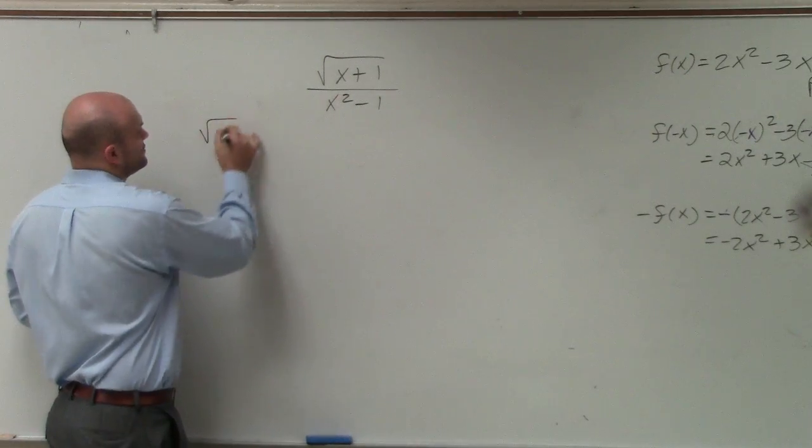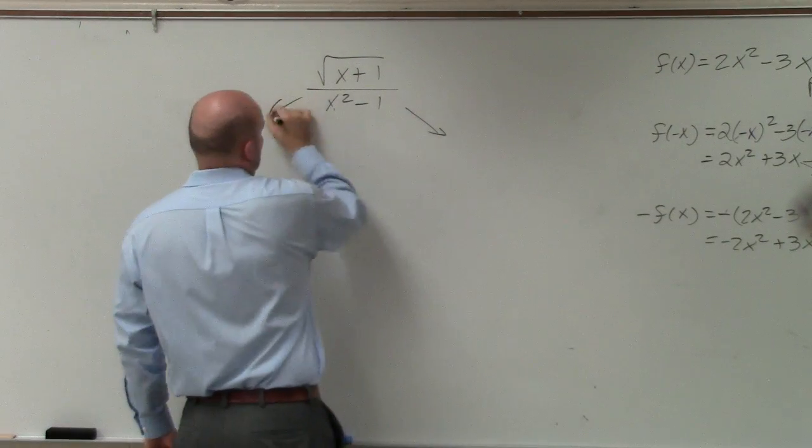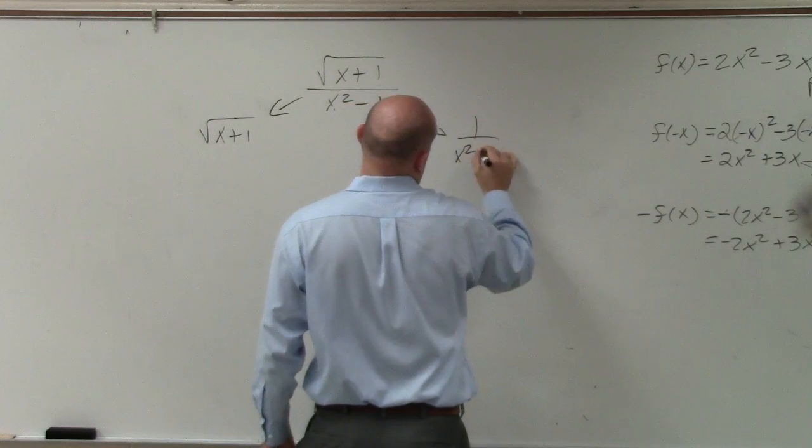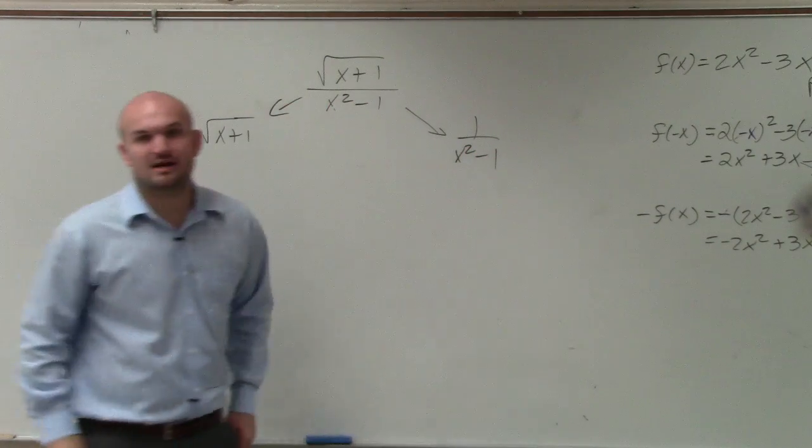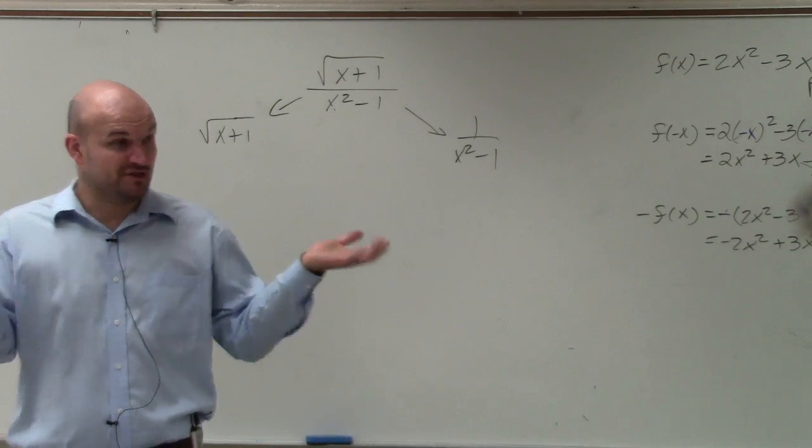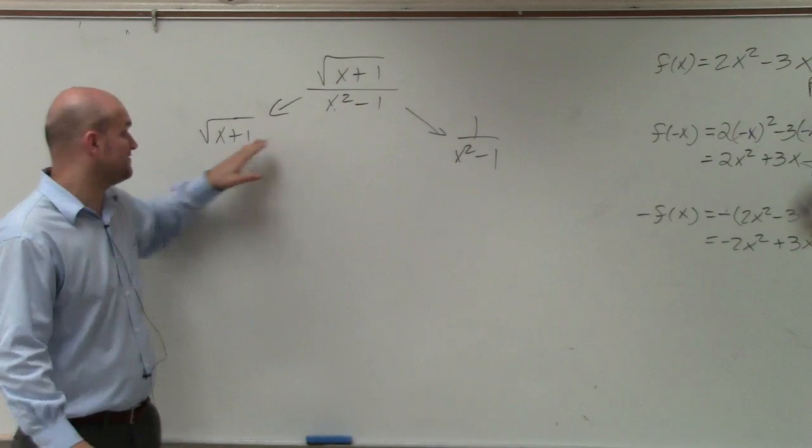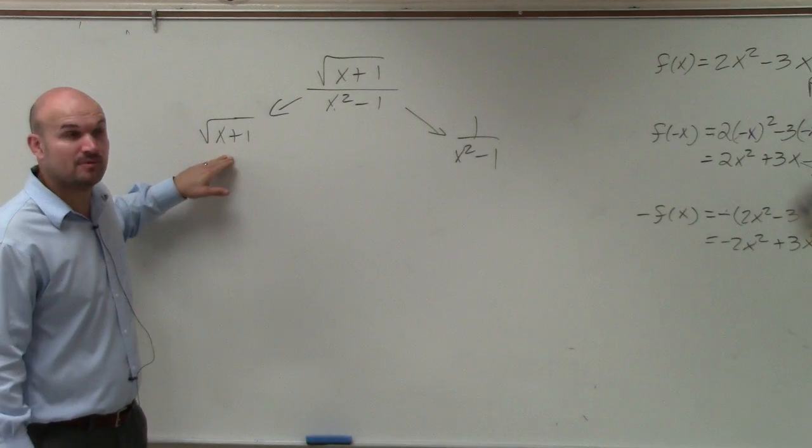We have the square root of x plus 1, and we have 1 over x squared minus 1. I'm just kind of breaking them apart. But there's two different restrictions. We could have a 0 in the denominator, or we could have a negative number under a radical.